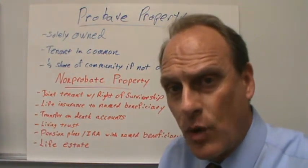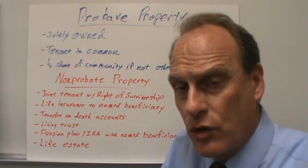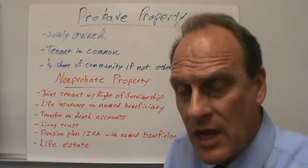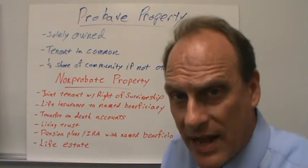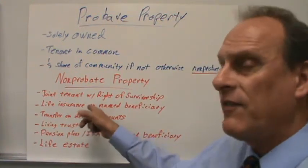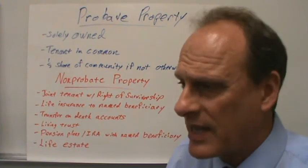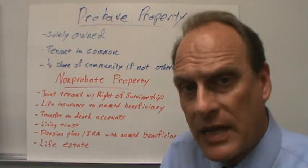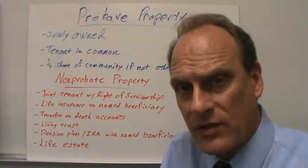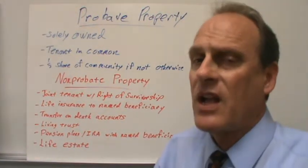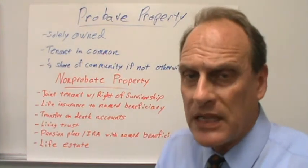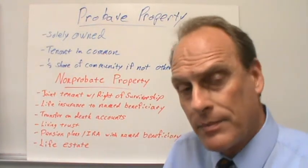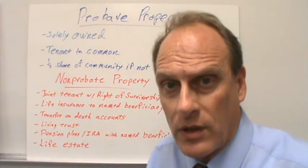When you hold property as joint tenant with right of survivorship, the survivors become the owner of that property — not whoever is set out in the will. Life insurance to a named beneficiary doesn't go through the estate and has nothing to do with the will, as long as the insurance policy designates a named beneficiary. It's just a contract matter between the insurance company and the person who paid the premiums — you simply ignore the probate courts.